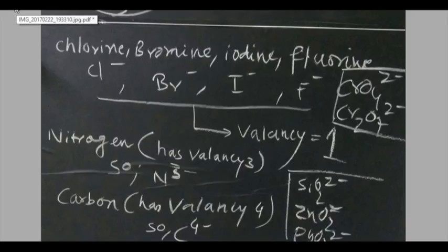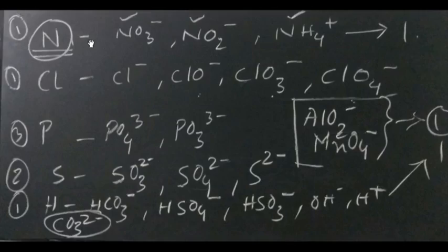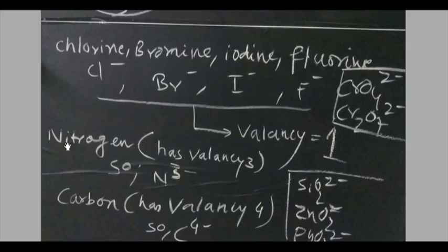Nitrogen. As we earlier have seen over here, any group associated with nitrogen will have valency of 1. But in case of nitrogen itself it has a valency of 3. Nitride ion.